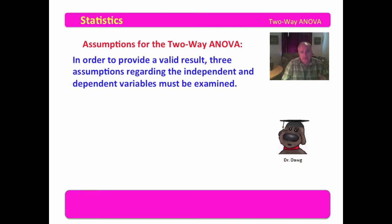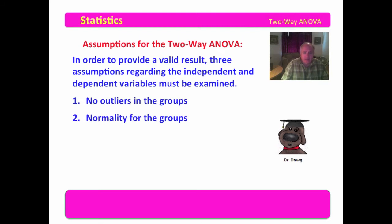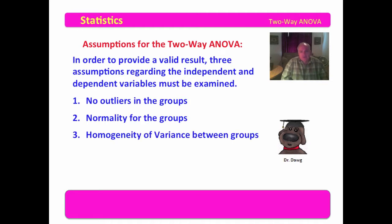By saying that we do this with the independent and dependent variables, what that means is we examine the dependent variable across the independent variable groupings. The first of these is that we have no outliers in the group — outliers are extreme values — and we will look at how to handle them. It also assumes that we have normality of the dependent variable across the groups, and then that we have homogeneity of variance between groups.